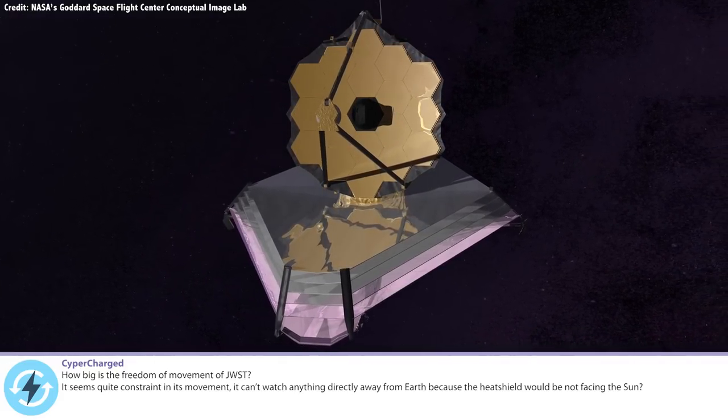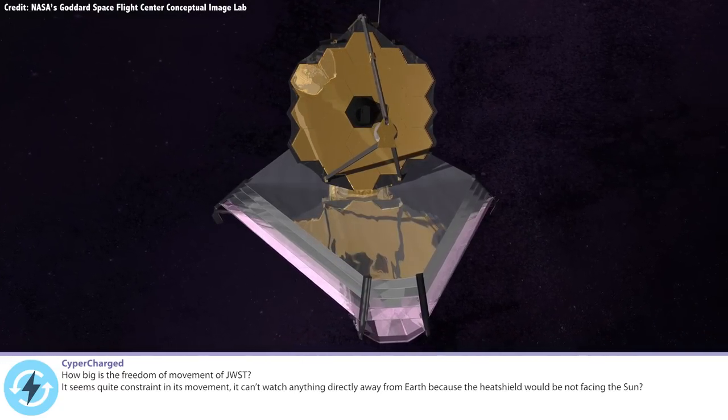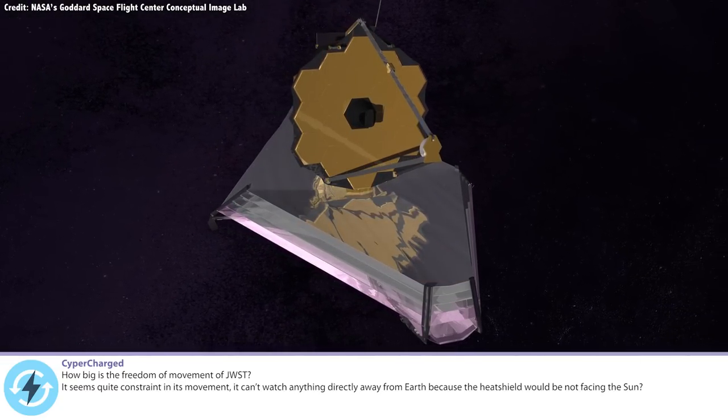Cybercharged. How big is the freedom of movement of James Webb? It seems quite constrained in its movement. It can't watch anything directly away from the earth because the heat shield will not be facing the sun.